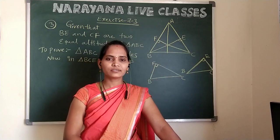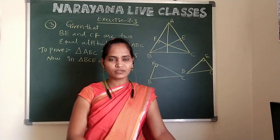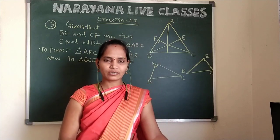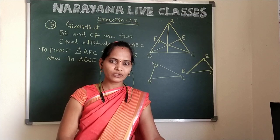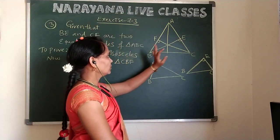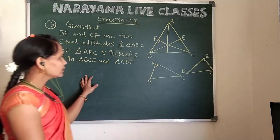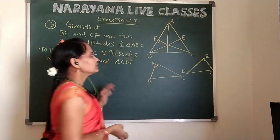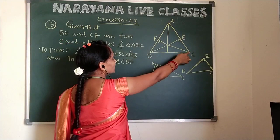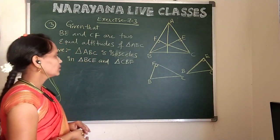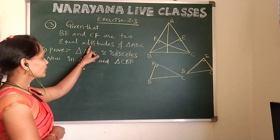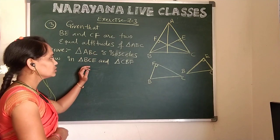Isosceles means a triangle in which two sides are equal — we call that an isosceles triangle. Before proving that, first we need to prove that the two given triangles are congruent. BE and CF are the two altitudes of the triangle, already given in the question.